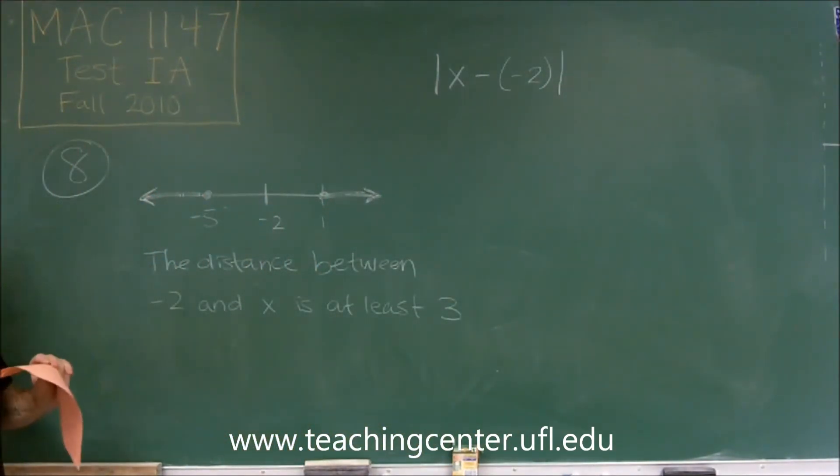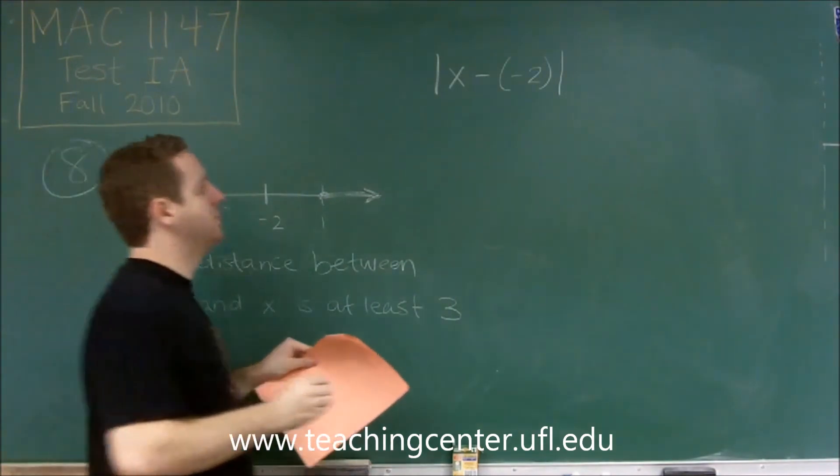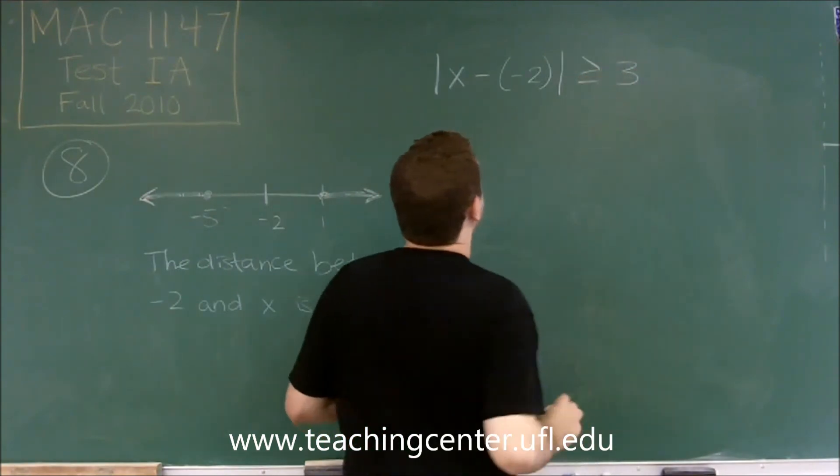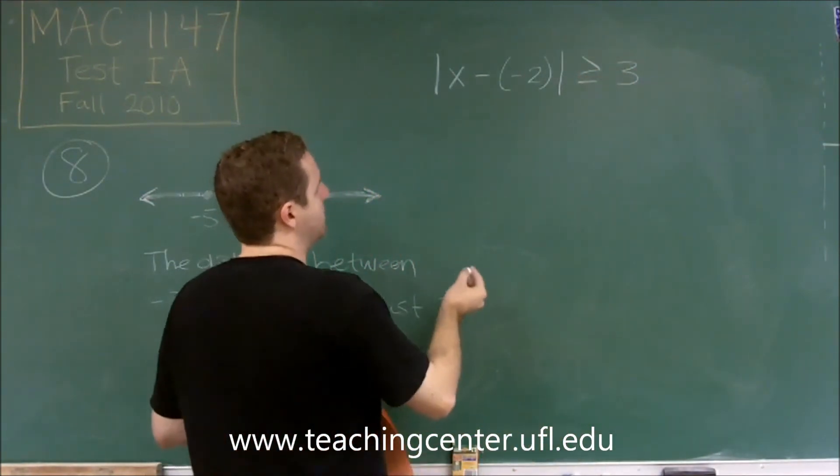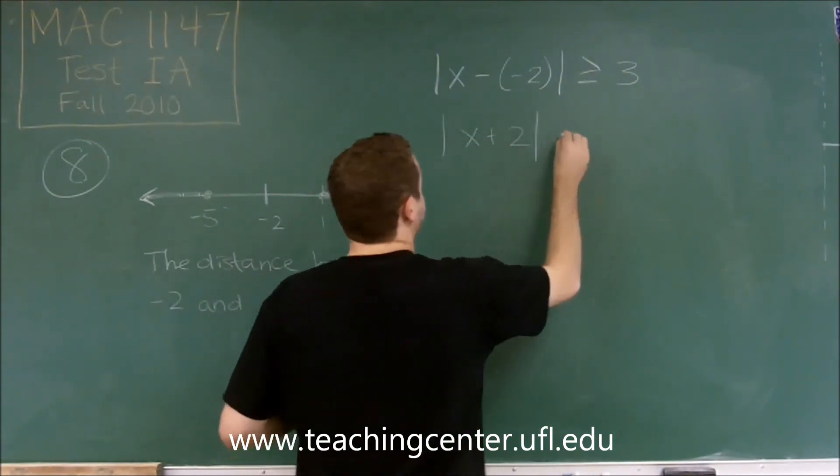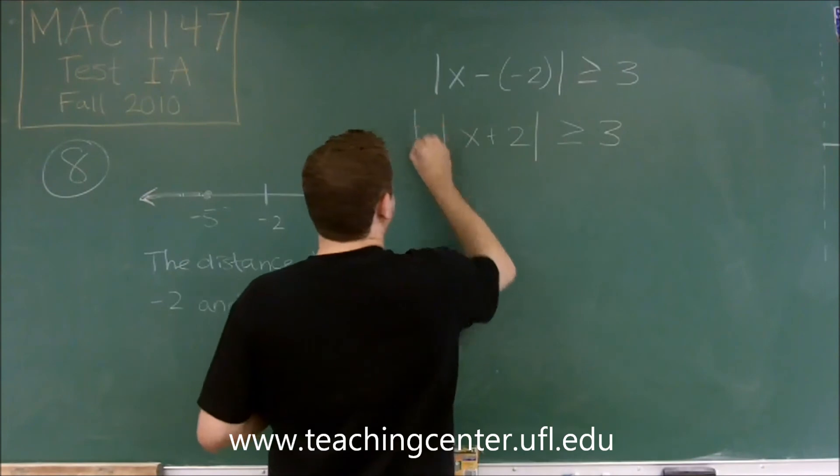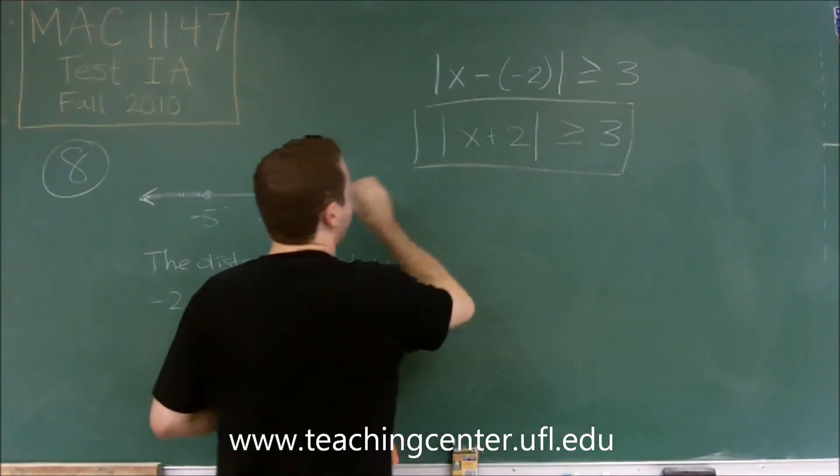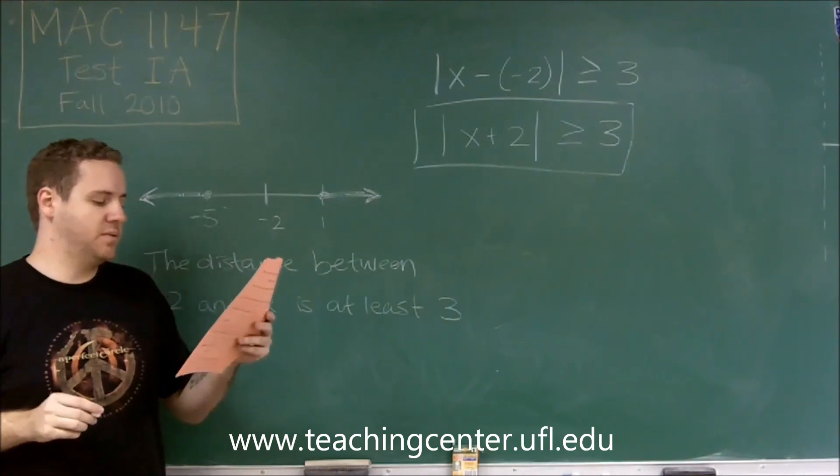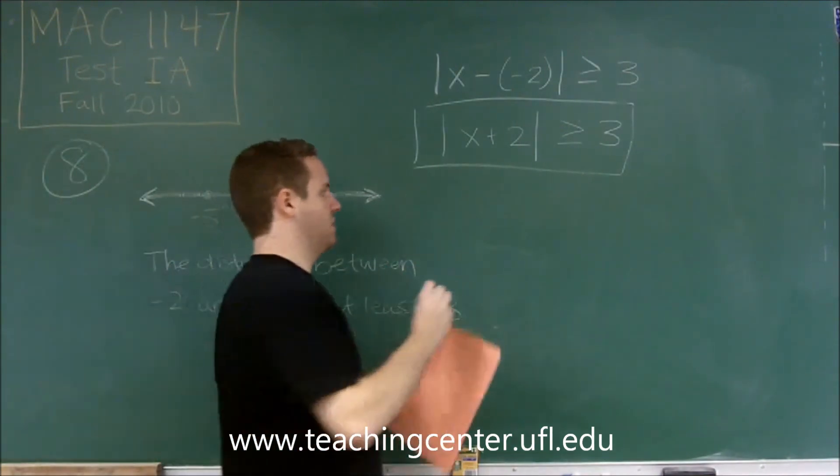That's the distance between x and negative 2, and it's at least 3, meaning greater than or equal to 3. Well, x minus negative 2 is x plus 2. So we get that the absolute value of x plus 2 has to be greater than or equal to 3. That is answer choice E.